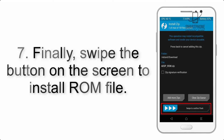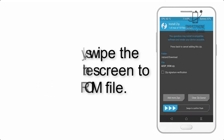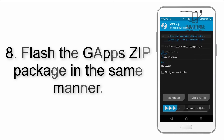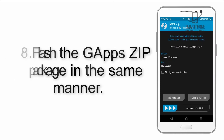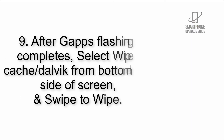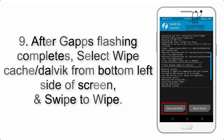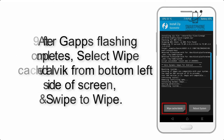Step 7: Swipe the button on the screen to install the ROM file. Step 8: Flash the G apps zip package in the same manner. Step 9: After G apps flashing completes, select Wipe Cache and Dalvik from the bottom left side of the screen and swipe to wipe.